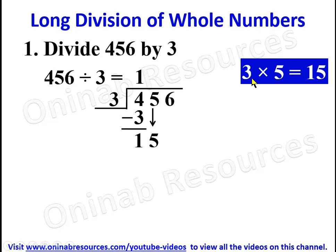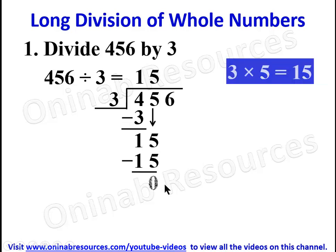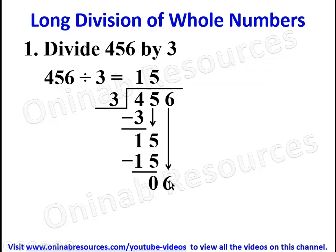We have to know the relationship between multiplication and division — forward is multiplication, backward is division. Fifteen divided by three gives five. So we have five. Five times three gives fifteen, then we subtract: fifteen minus fifteen gives zero.